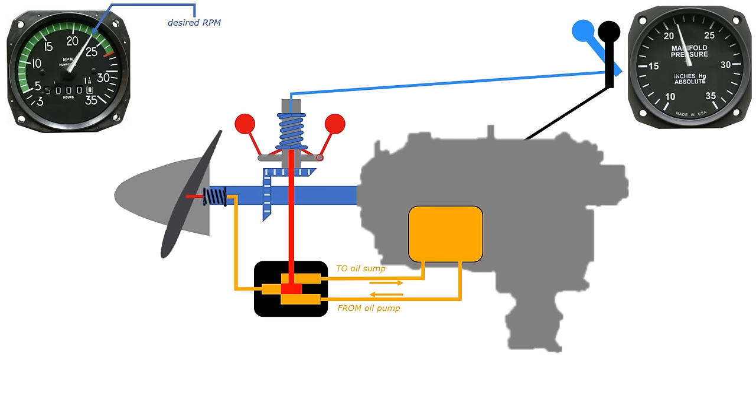Let's say we bring the throttle back to reduce power. The manifold pressure will come back to 21 inches. With less power, the propeller won't be able to spin as fast, unless the blade angle reduces. Here's how that'll work.